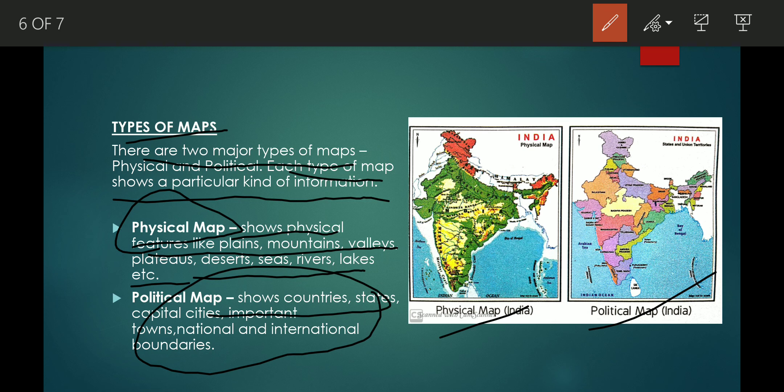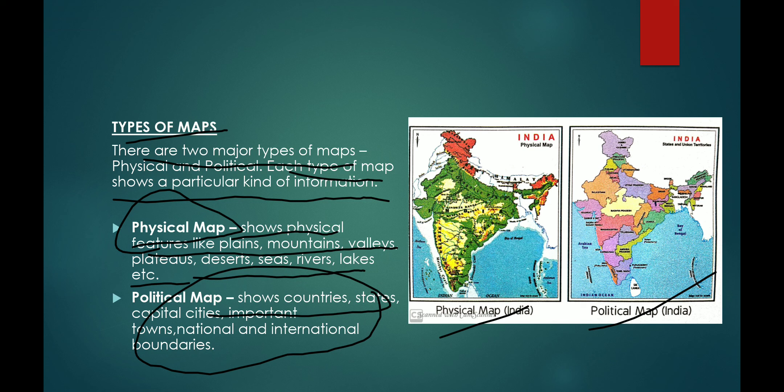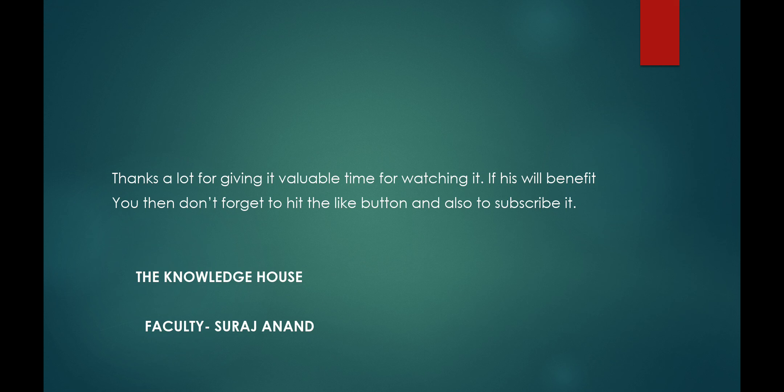We know that maps are of different types. First is the physical map and the second is the political map.